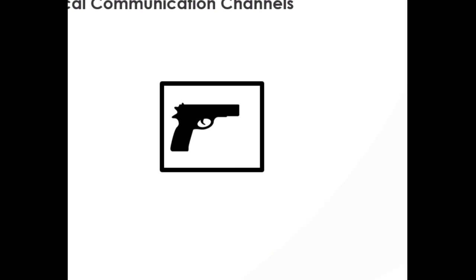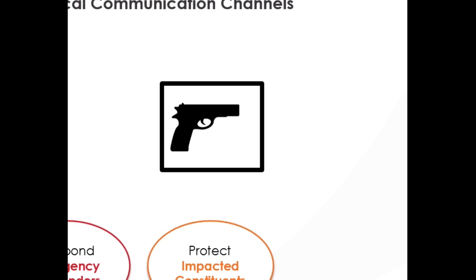One key consideration is thinking about who your communication channels are for: who is going to respond to the emergency, how do you communicate with them, and how do you protect your impacted constituents? This is very different in healthcare than in other settings — specifically considering how patients and visitors might be protected in an emergency scenario, which is not always part of standard IT systems. And following what Marjorie highlighted: how do you keep executives and stakeholders informed throughout the process?